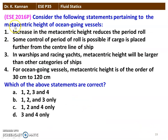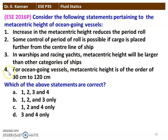The next question from the 2016 question paper. Consider the following statements pertaining to the metacentric height of ocean-going vessels: (1) Increase in metacentric height reduces the period of roll. (2) Some control of period of roll is possible if cargo is placed further from the centerline of the ship. (3) In warships and racing yachts, metacentric height will be larger than other categories of ship. (4) For ocean-going vessels, metacentric height is of the order of 30 cm to 120 cm. All 4 statements are correct.